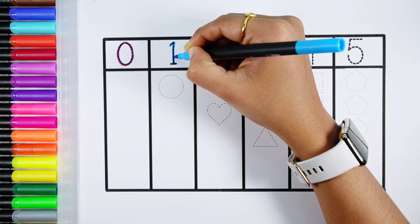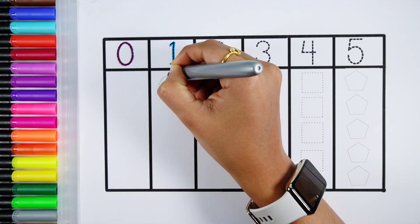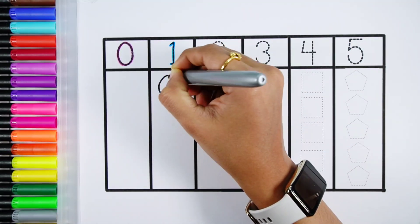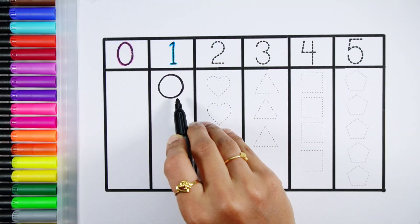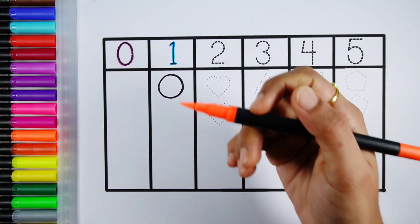Number one. One circle. Fluorescent orange color.